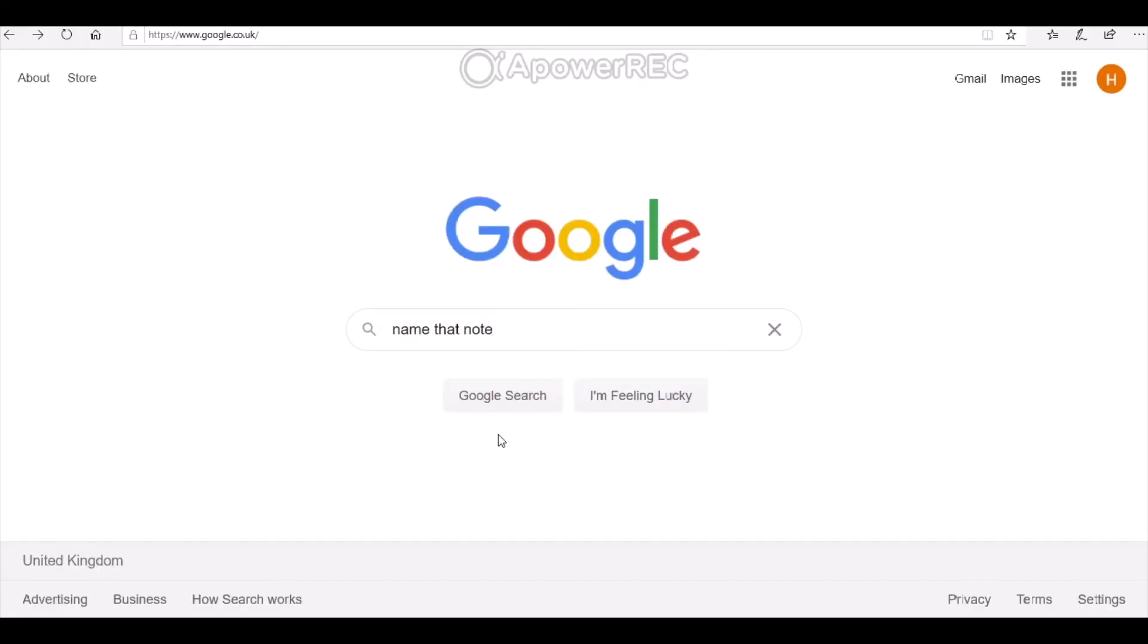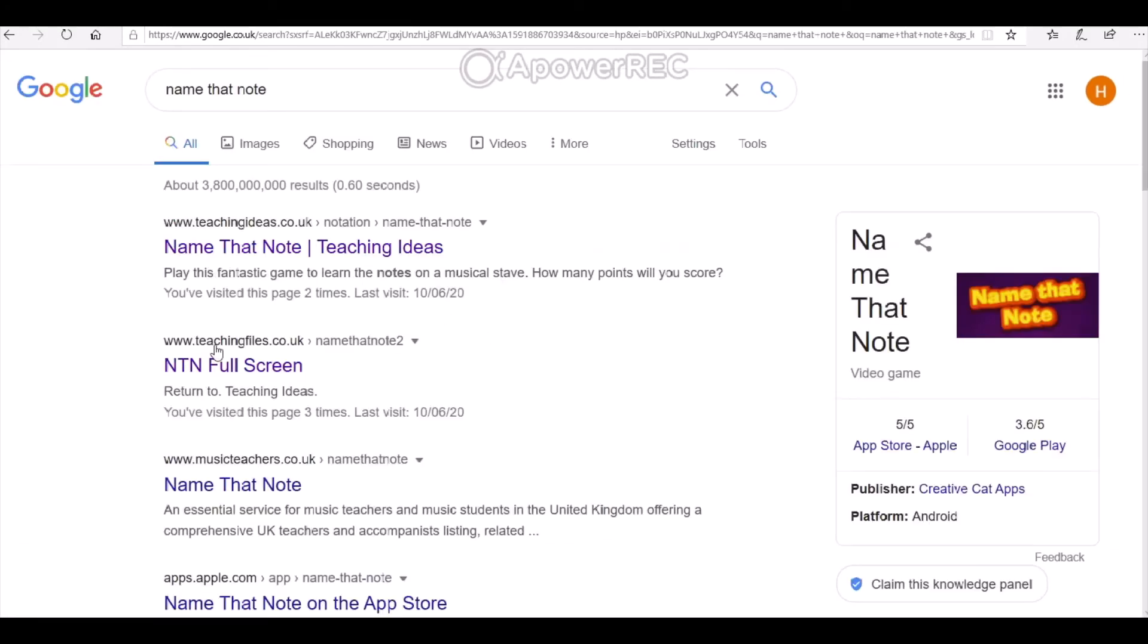Okay, let me show you how to find the game that we're going to use to practice our note reading. First thing you need to do is open your web browser, go to Google, and type in Name That Note. We're going to search that, and I want you to choose the second entry down—that's Name That Note NTN Full Screen.